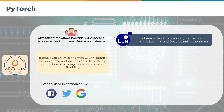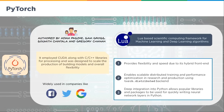PyTorch is widely used at companies like Facebook, Twitter, and Google. It provides flexibility and speed due to its hybrid front end, enables scalable distributed training and performance optimization in research and production using the torch.distributed backend. Its deep integration with Python allows popular libraries and packages to be used for writing neural network layers — and since it has that dual layer, you can work in C++ or C and also switch over to Python.